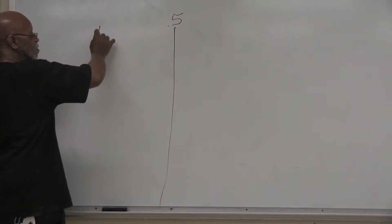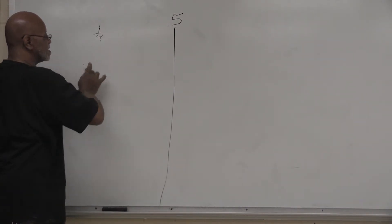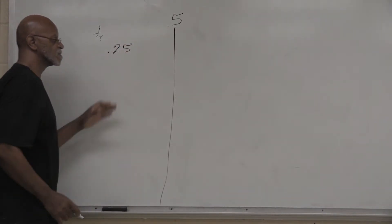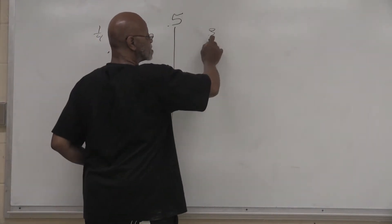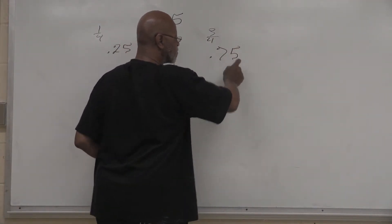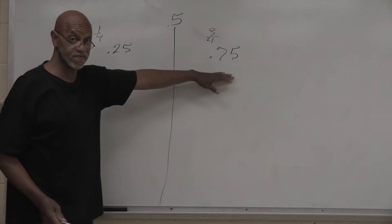So my quarters: one-quarter is .25, and three-quarters is .75. So 2575 pattern.